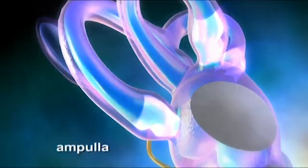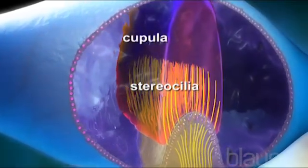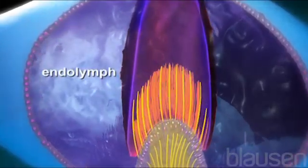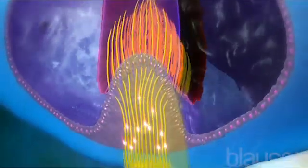Within the ampulla, long stereocilia of hair cells are embedded in the cupula, which sticks out into the endolymph. When your head moves, the endolymph moves the cupula and stimulates the stereocilia.